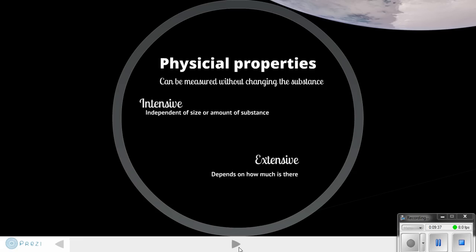Just for sake of on the worksheet, temperature is an intensive property. Whether I have a milliliter or whether I have one gram of metal that's 100 degrees, or I have a ton of metal that's 100 degrees, they both are 100 degrees. Temperature would be an intensive property.